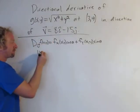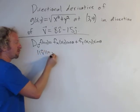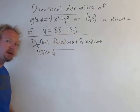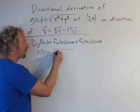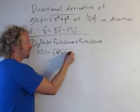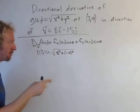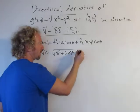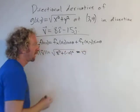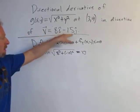So magnitude of v is the square root and then you square each component and you add them up. So it's 8 squared plus negative 15 squared. If you work this out I think you get 17. Okay so now we just divide v by 17.